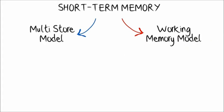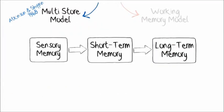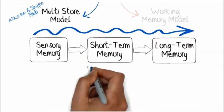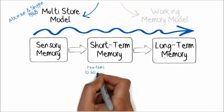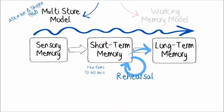The multi-store model proposed by Atkinson and Shiffrin in 1968 is built on the idea of three memory stores and identifies memory as a flow of information through the system. Short-term memory holds a small amount of information in a readily available state for a short period of time, and can be transferred to long-term storage only if it's mentally repeated, which is known as rehearsal.